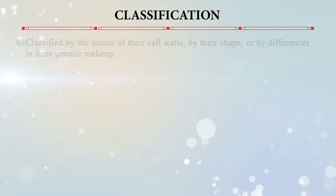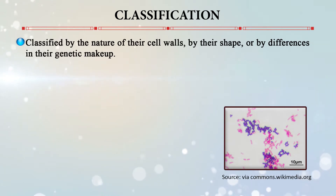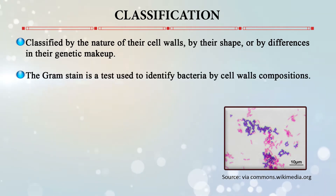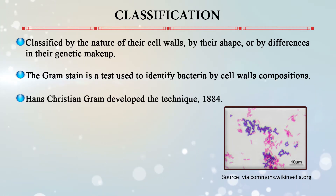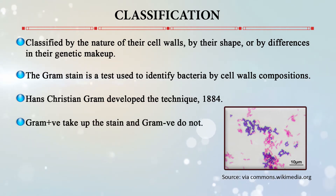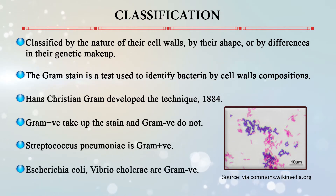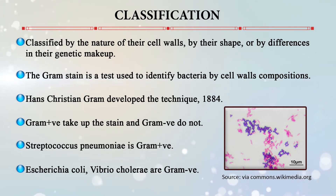Some bacteria also have means of locomotion called pili or fimbriae, which are external structures used for movement. Bacteria can be classified by the nature of their cell walls, by their shape, or by differences in their genetic makeup. The Gram stain is one test that identifies bacteria by cell wall composition — Hans Christian Gram developed this technique in 1884. Gram-positive cells take up the stain and Gram-negative cells do not. An example of Gram-positive bacteria is Streptococcus pneumoniae, and Gram-negative examples include Escherichia coli and Vibrio cholerae.